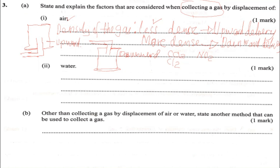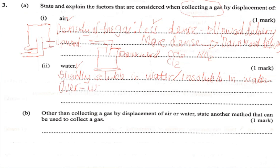Now what about the factor we use when collecting a gas over water? The factor is that the gas is slightly soluble in water — or you can say the gas is insoluble in water. So if a gas is slightly soluble in water, then that gas is collected by the over-water method.